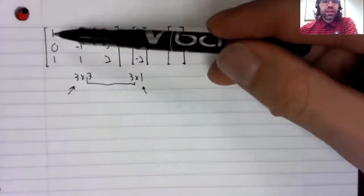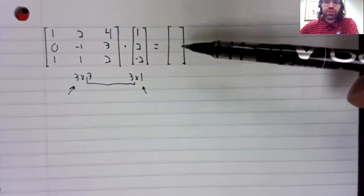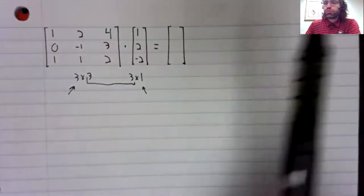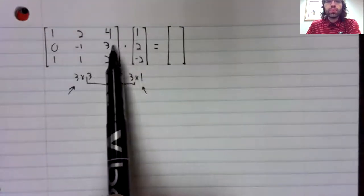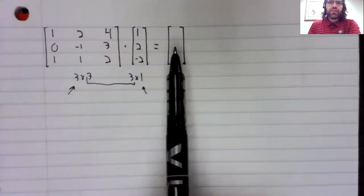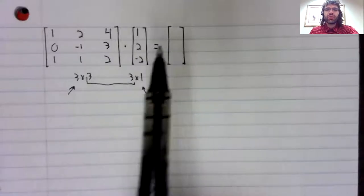This matrix has three rows. This vector has three rows. That's always true. When we're doing this multiplication, this matrix will always have as many rows as this vector.